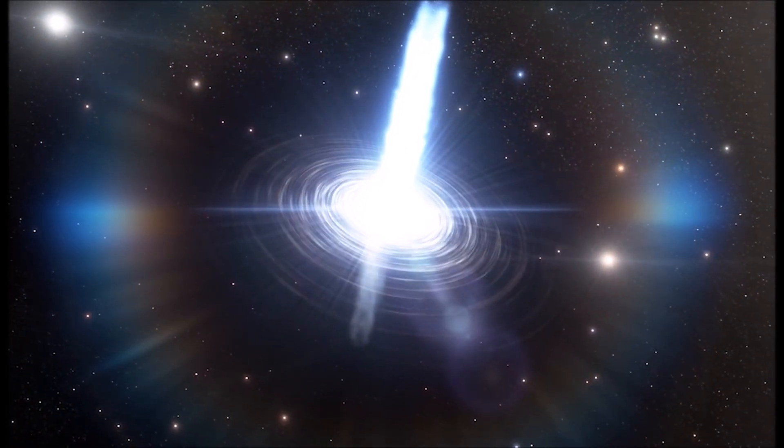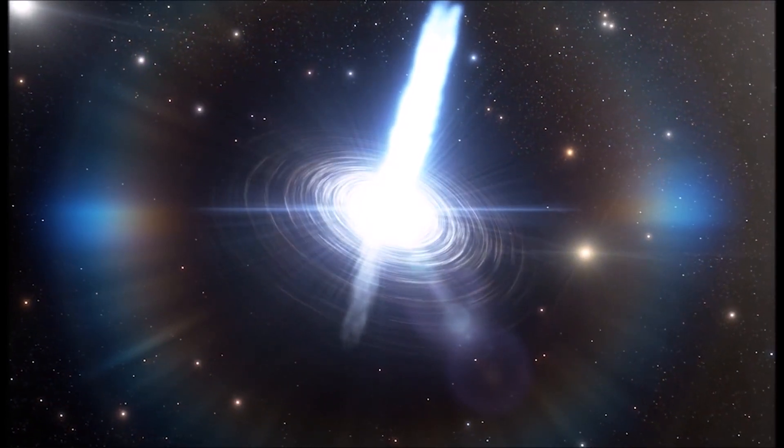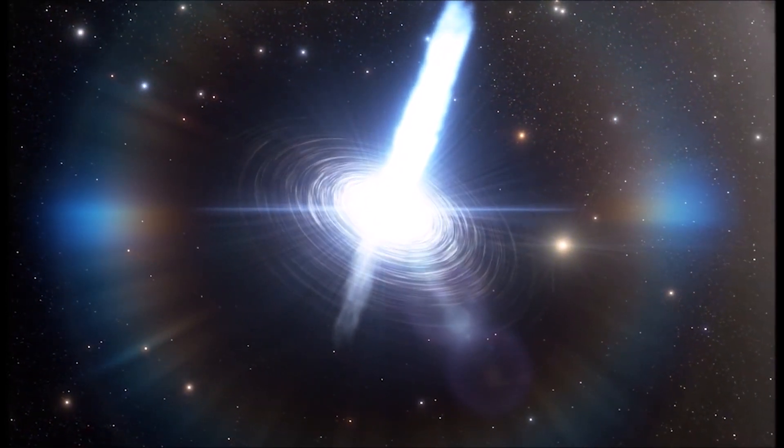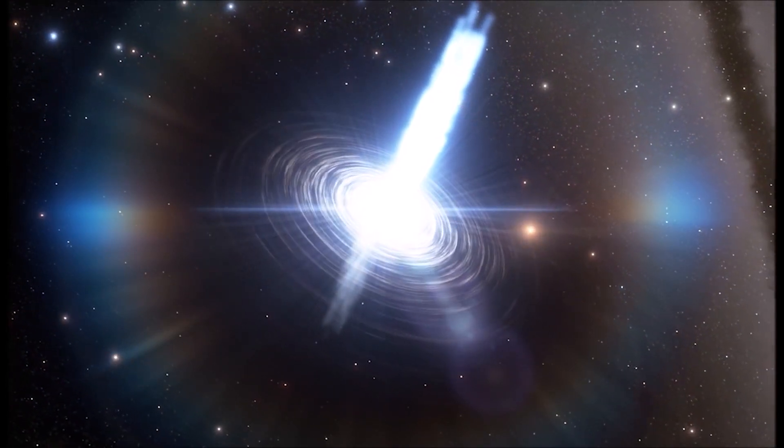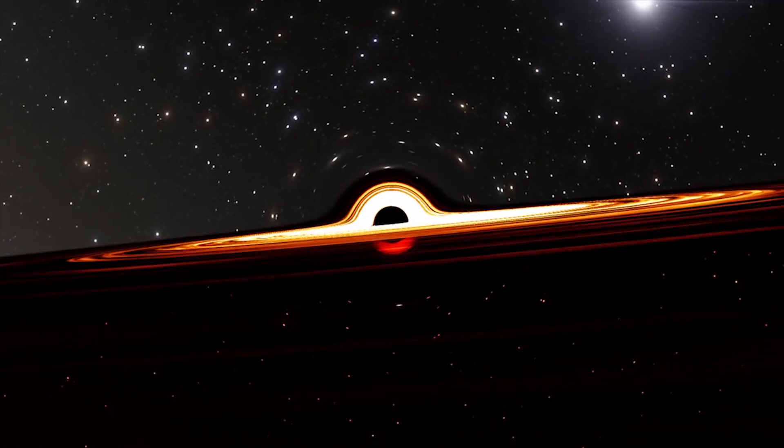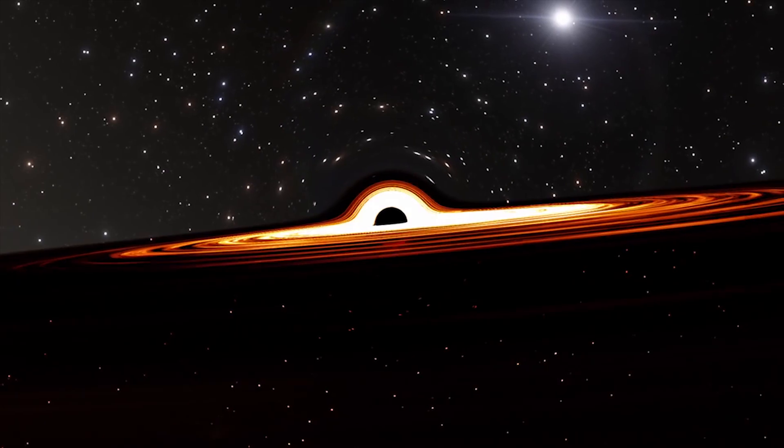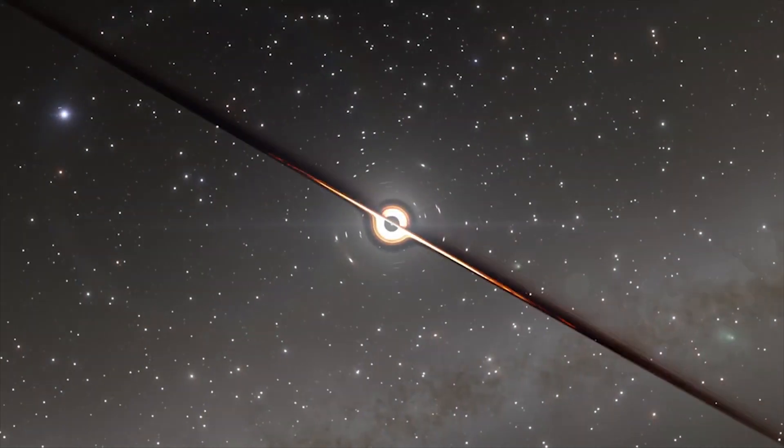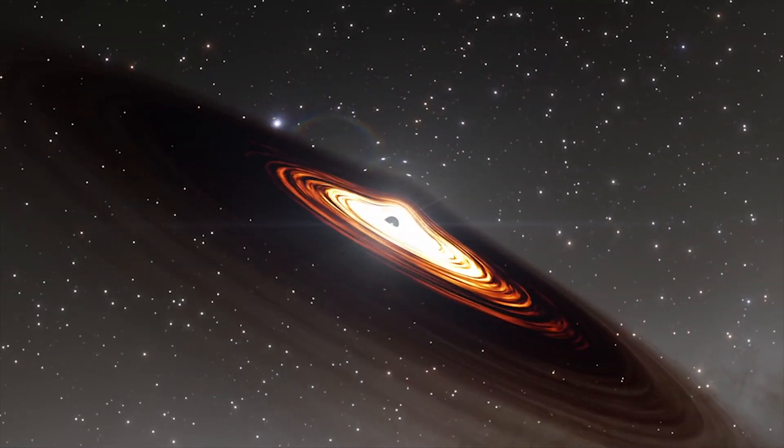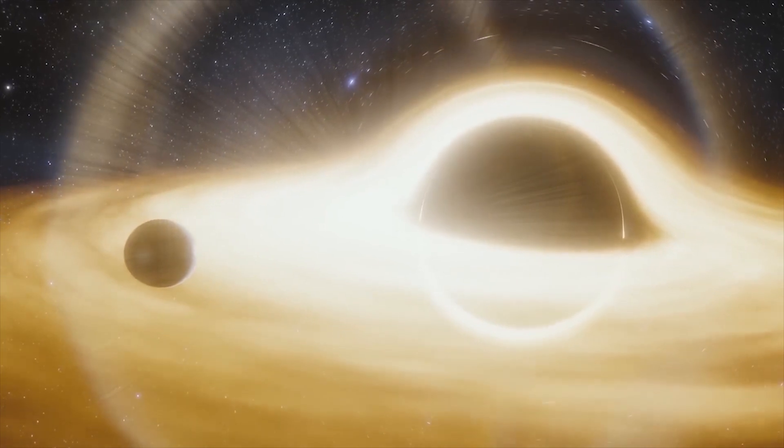This collapse results in a mind-bogglingly dense object called a singularity, where all the mass of the star is concentrated into an infinitely small point. The gravitational force surrounding this singularity becomes so intense that it creates a region in space where escape is impossible. This region is what we call a black hole.